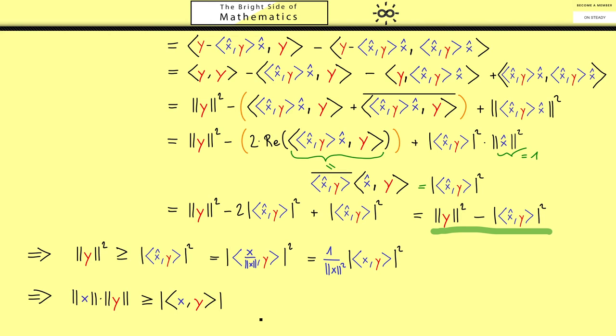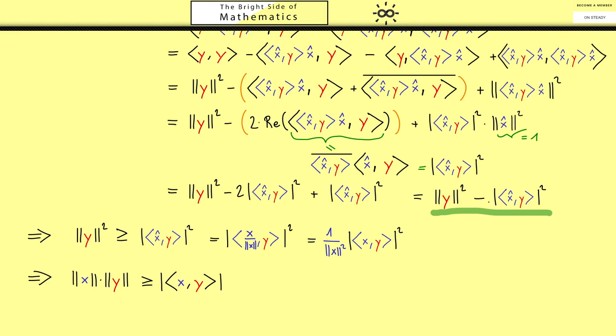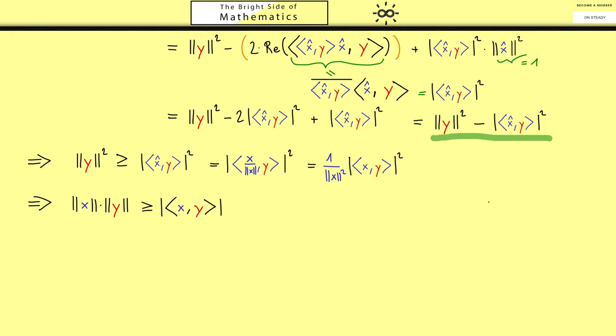Well that's the whole proof of the inequality. I will skip the part about the equality now. Because I want to use the time to show you that the symbol we use here is indeed a norm. So it fulfills the triangle inequality. And we will do that by using the Cauchy-Schwarz inequality. In fact the triangle inequality is most of the time the hardest part of a proof that something is a norm.